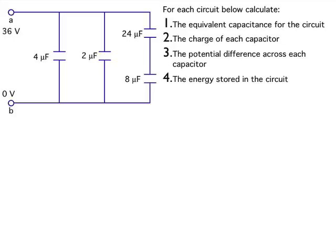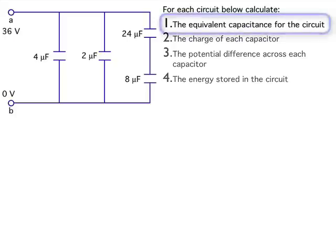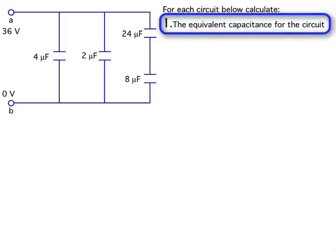So that's what we're after. But we're going to pick this off in pieces. This video is going to focus on finding the equivalent capacitance for the circuit. So what I've drawn is a compound circuit made up of four capacitors: a 4 microfarad, 2 microfarad, 24 microfarad, and 8 microfarad. They are connected to points A and B, which are at 36 volts and 0 volts. So the potential difference across the whole circuit is 36 volts.